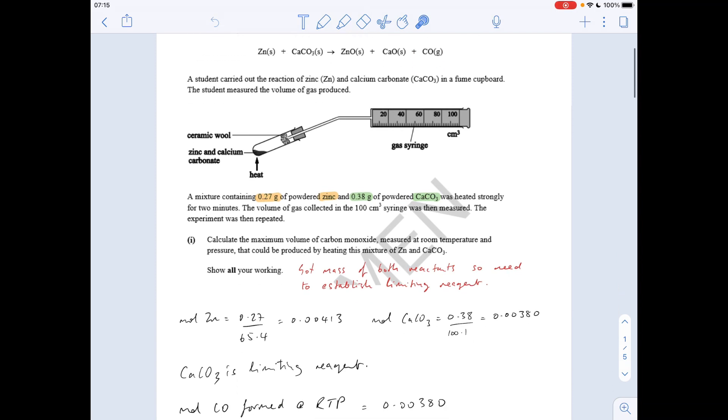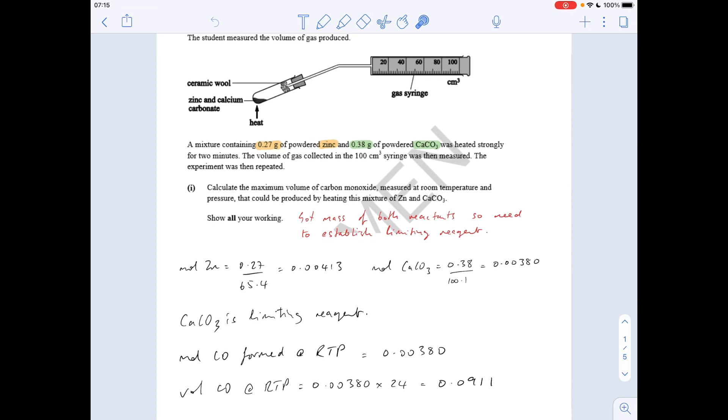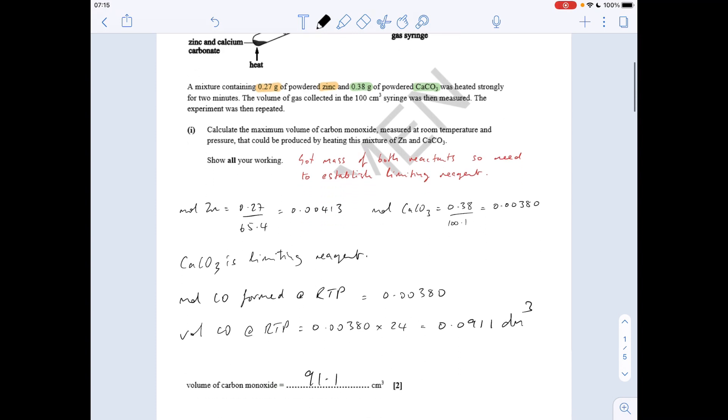The moles of zinc: mass over MR, that number there. Likewise, calcium carbonate, that number there. You can see the calcium carbonate is the lower moles, it's the limiting reagent. So the moles of carbon monoxide will be the same as the moles of calcium carbonate from the ratio—it's all one to one. Multiply by 24 to get the volume of carbon monoxide in decimeters cubed, then multiply by a thousand to get it into centimeters cubed. So it was 91.1.